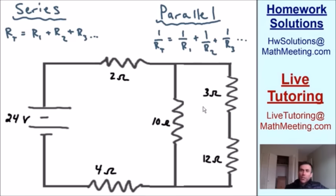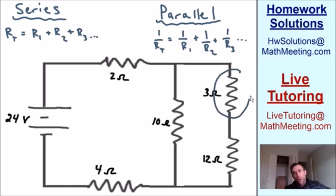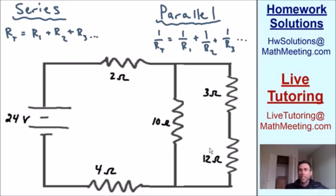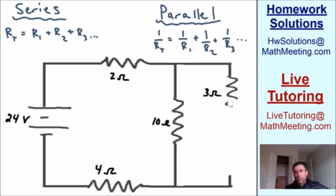I like to start with the resistors farthest away from the battery source. We have a 24-volt battery, and the farthest resistors are the two on the right-hand side. These two resistors are in series, so we just add them: 3 ohms plus 12 ohms equals 15 ohms. We can replace those two resistors with one equivalent resistor of 15 ohms.